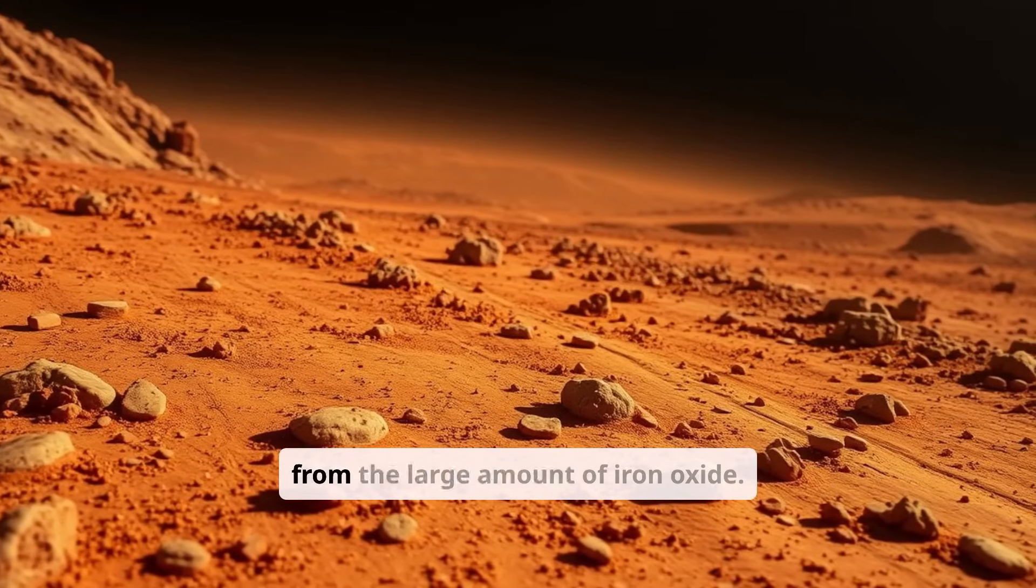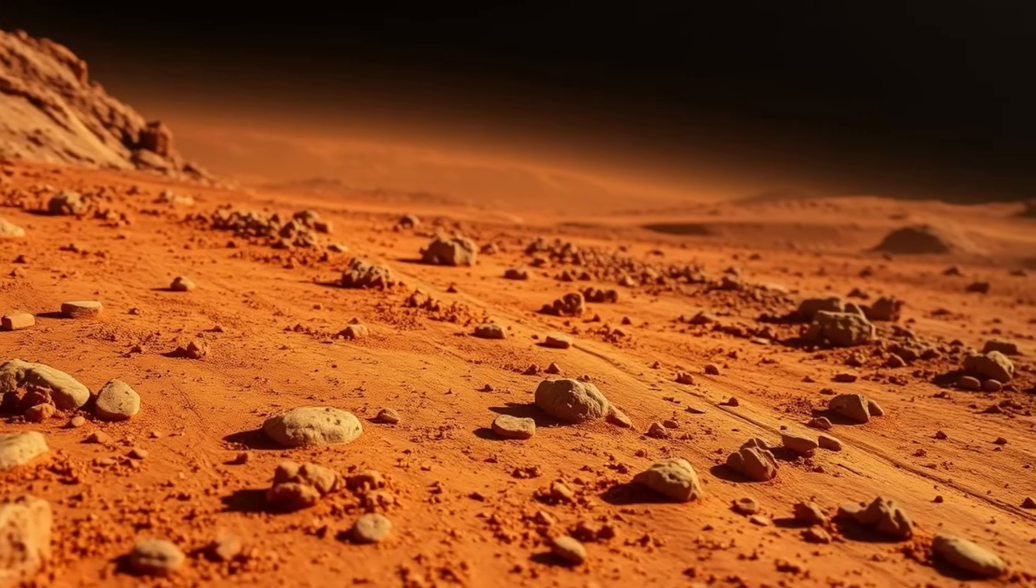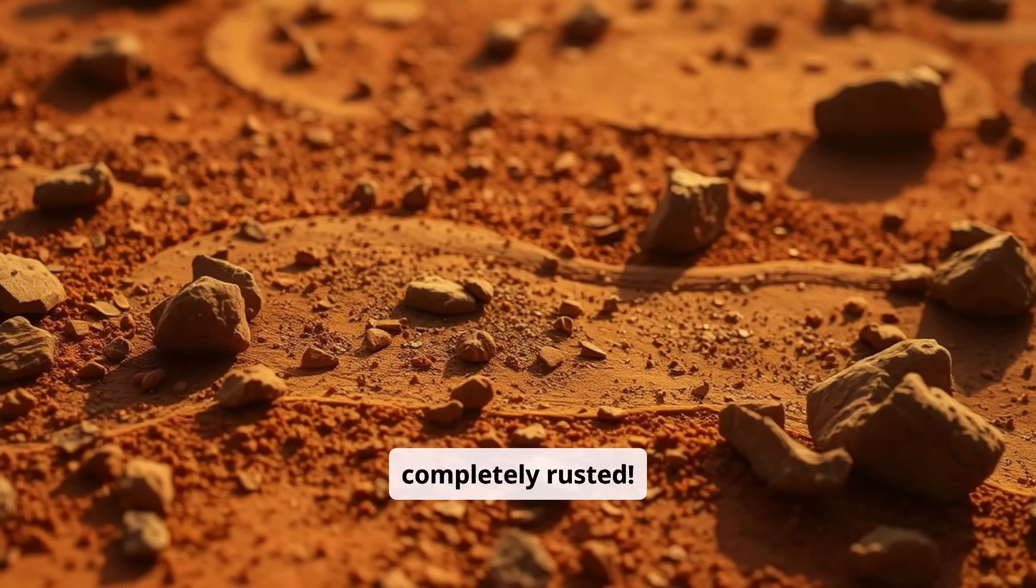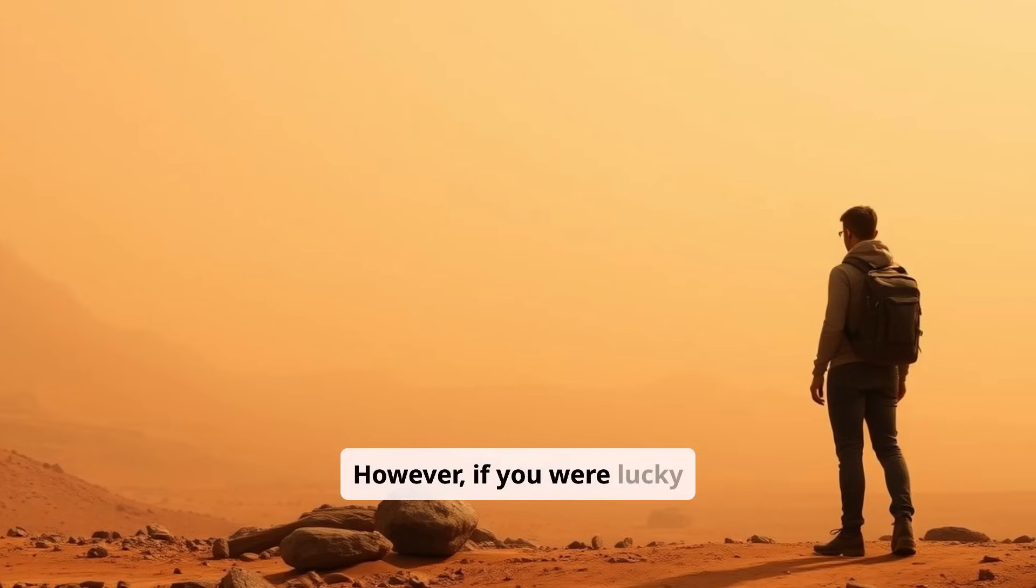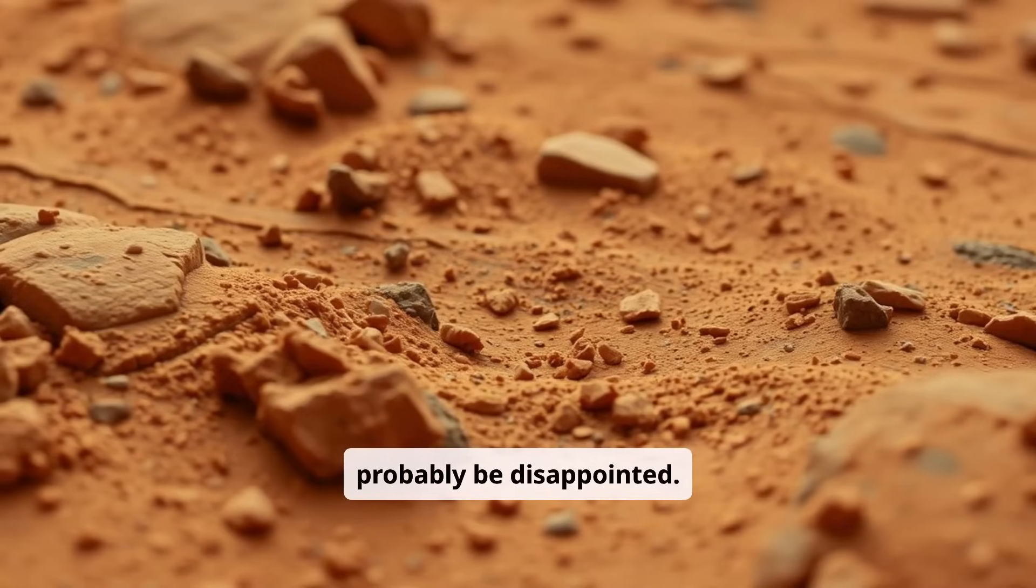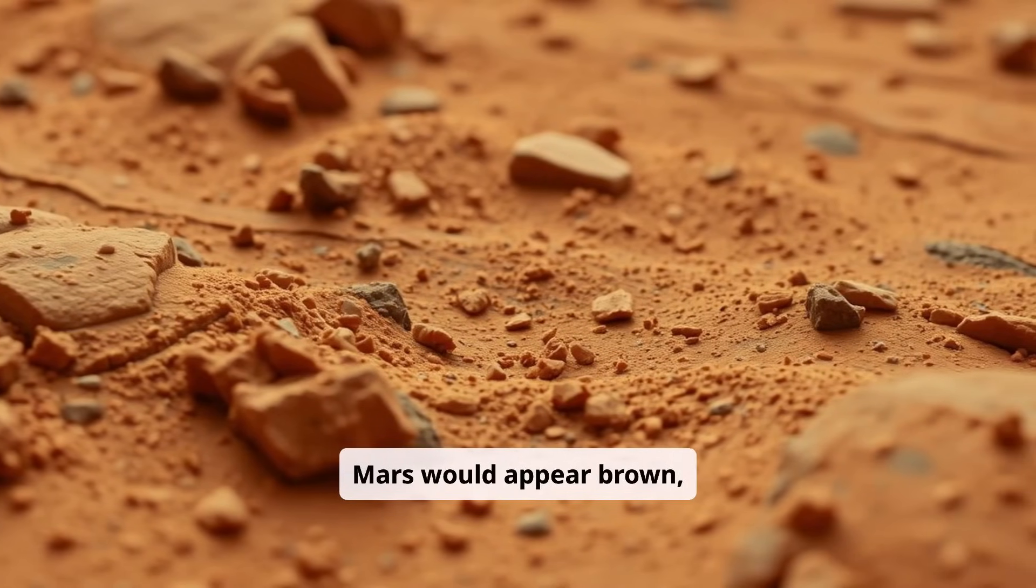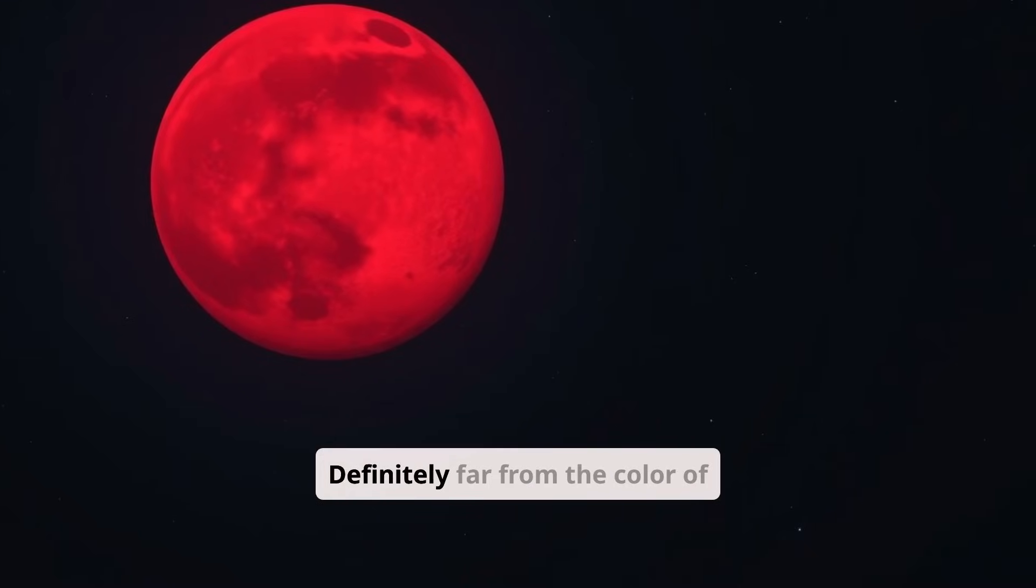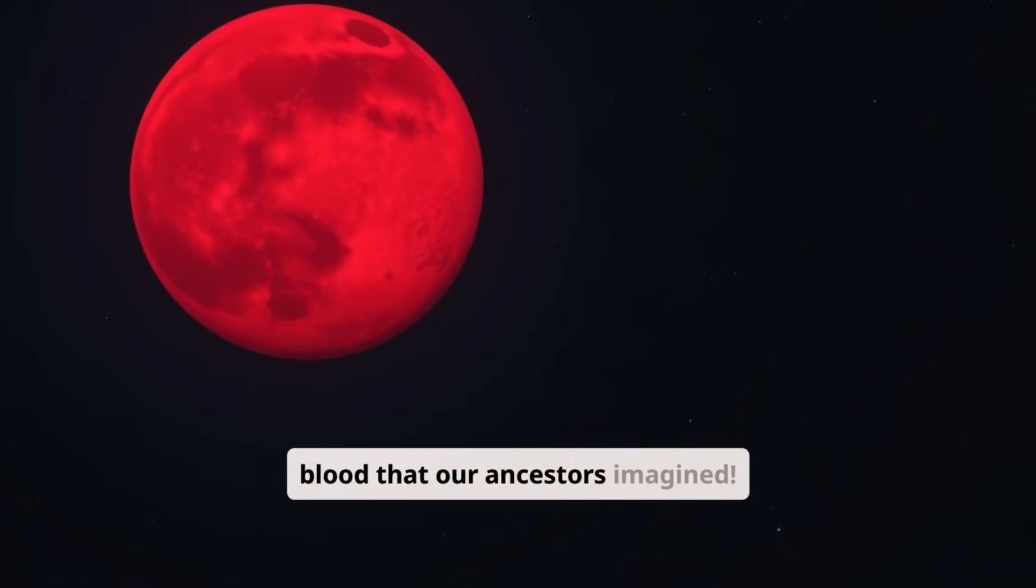The coloring of the planet comes from the large amount of iron oxide. So it looks as if it's completely rusted. However, if you were lucky enough to travel to Mars and see it with your own eyes, you would probably be disappointed. Mars would appear brown, maybe slightly orange. Definitely far from the color of blood that our ancestors imagined.